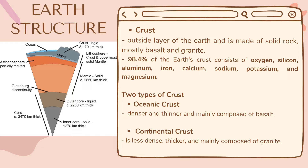The continental crust is less dense, thicker, and mainly composed of granite. Most of the continental crust is felsic rock, and feldspar, granite, and quartz are all commonly found. The continental crust has a high silicon and oxygen content, which makes up about 60% of its mass.